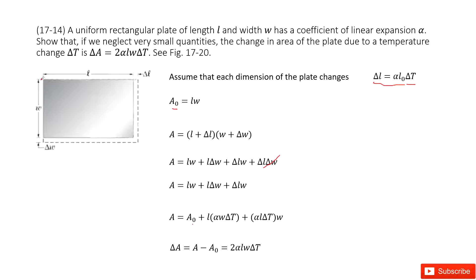Now, delta W equals alpha times W times delta T, because the side starts at W and expands by delta T. Similarly, delta L equals alpha times L times delta T. So L·delta W plus delta L·W equals alpha·W·delta T·L plus alpha·L·delta T·W, which equals 2·alpha·LW·delta T. Therefore, delta A equals the final area minus the initial area, which gives delta A equals 2·alpha·LW·delta T.